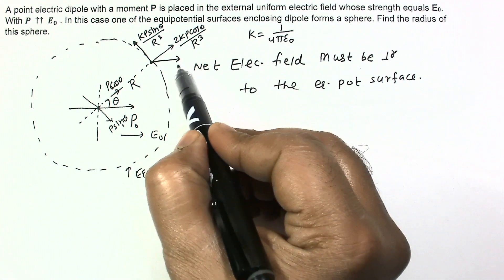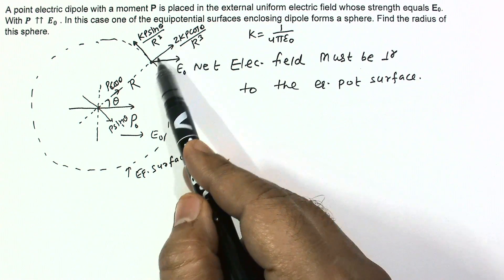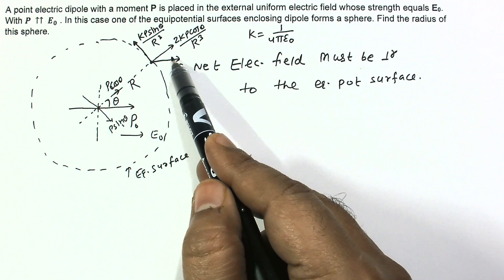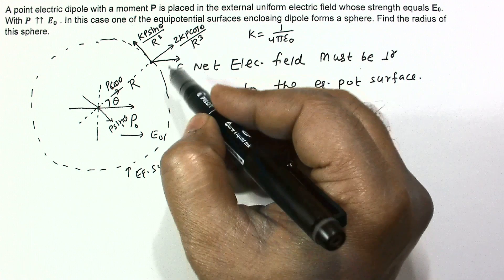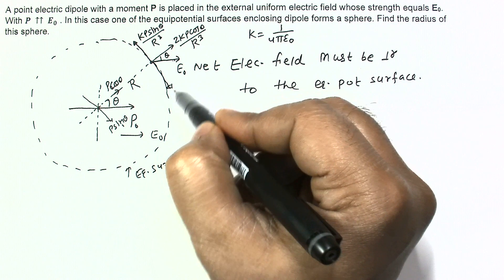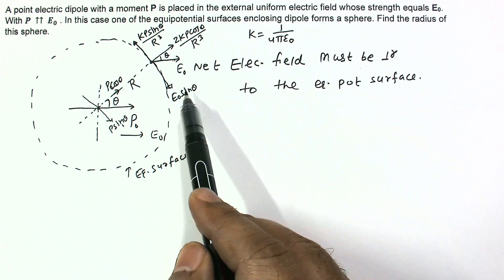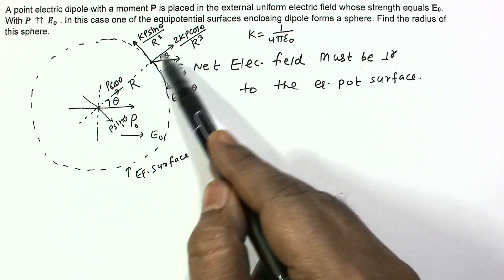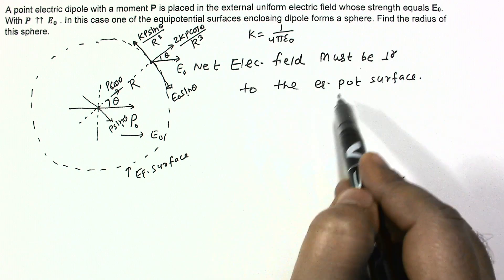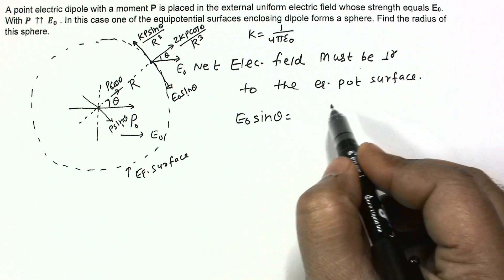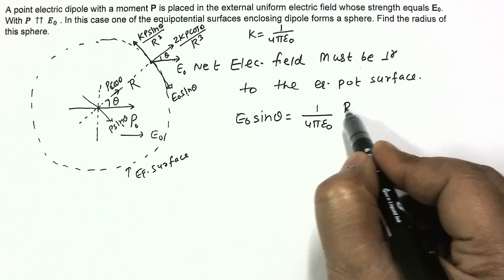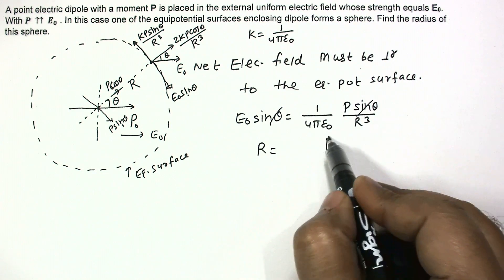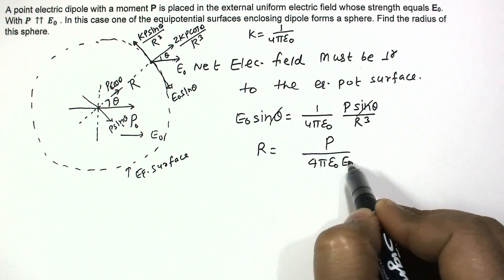Now the resultant must be perpendicular to this surface — that means along the radial direction. This means the electric field has two components: one along the r direction and one along the tangential direction. For the net field to be radial, the tangential components must cancel. So the condition is: E₀ sinθ must equal (1/4πε₀) · p sinθ divided by r³.